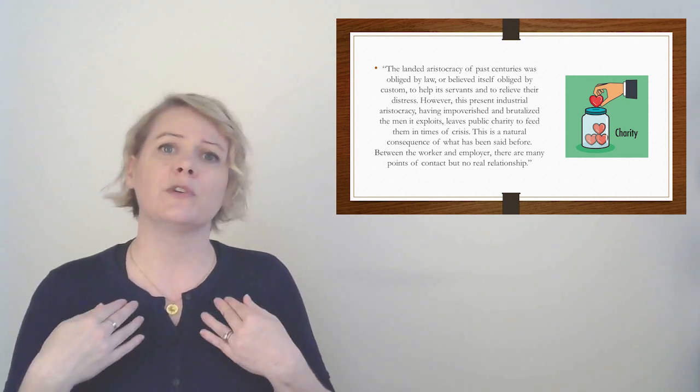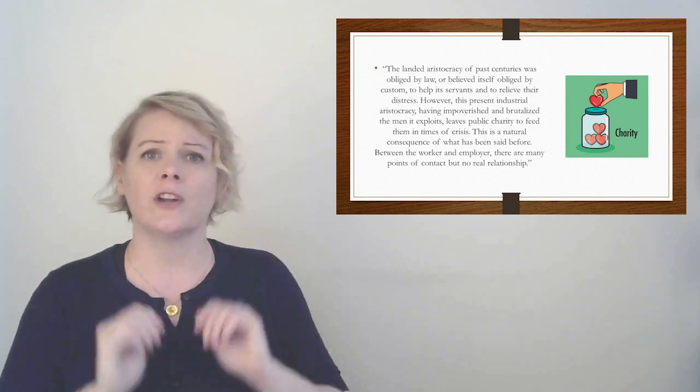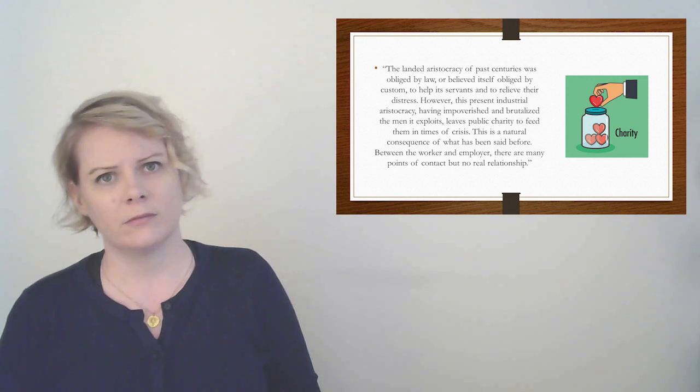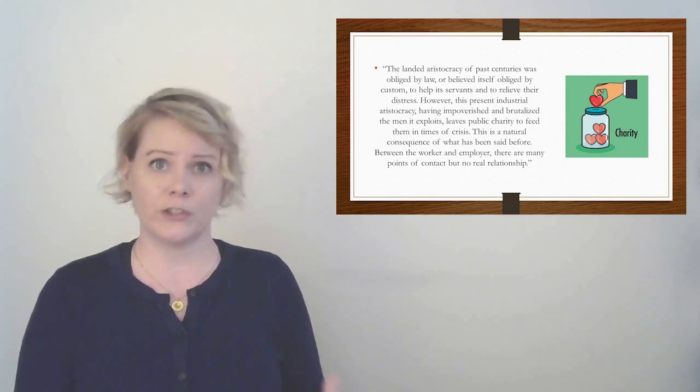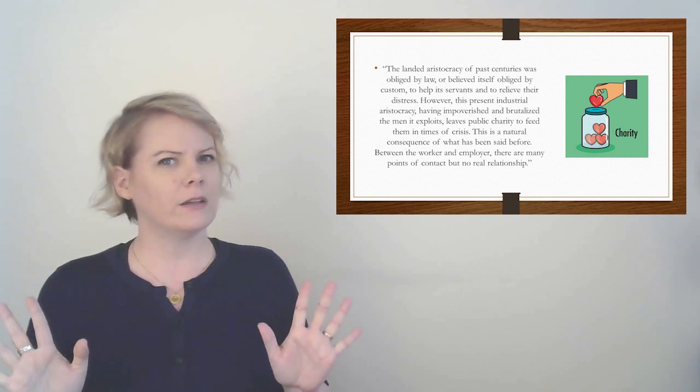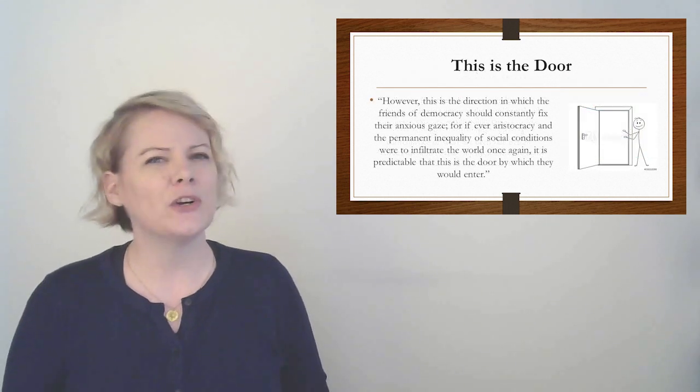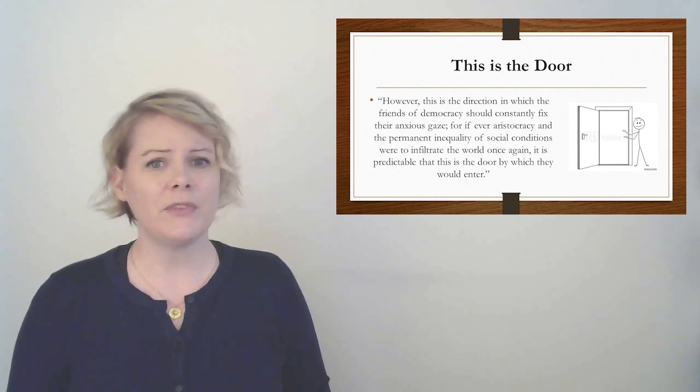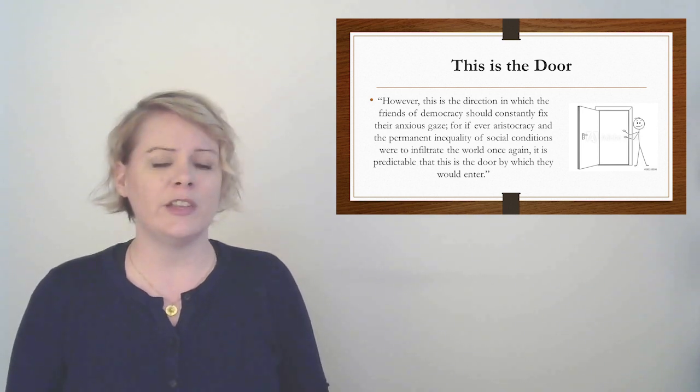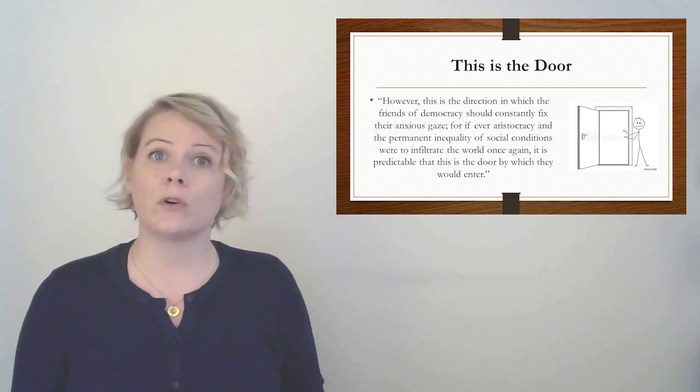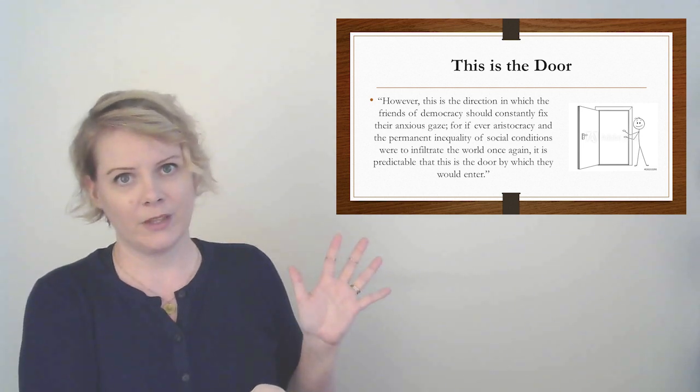Now, it's like you're an employee, but you could work for somebody else. It's like who the boss is doesn't matter, but you're not connected. You're not master and servant. You're just employer and employee, and you might never look at each other. And he thinks this could actually be a little bit dangerous. The landed aristocracy of past centuries was obliged by law or at least believed itself obliged by custom to help its servants and to relieve their distress. However, in this present industrial aristocracy, having impoverished and brutalized the men it exploits, leaves public charity to feed them in times of crisis. This is a natural consequence of what has been said before. Between the worker and the employer, there are many points of contact, but no real relationship. So in the olden days, the aristocracy used to take care of the poor. They felt responsible for them, especially the ones who lived on their land. But now he says this new industrial aristocracy does not care. They are rich. You are poor. Who cares? They don't feel responsible for the working class, even though they created the working class. There's all these people who work for them who are poor and who are starving, and they don't feel like that's their responsibility. In the olden days, they did. In the modern days, they don't. They're like, that's a you problem. And Tocqueville says this could turn out really badly.